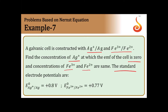The standard potentials of the electrodes are given — both the silver electrode and the redox electrode potentials are provided. We need to find the concentration of Ag+ at which [Fe2+] and [Fe3+] are equal. We will apply the Nernst equation, but first we must determine which electrode is the anode and which is the cathode, as this is not specified in the question.